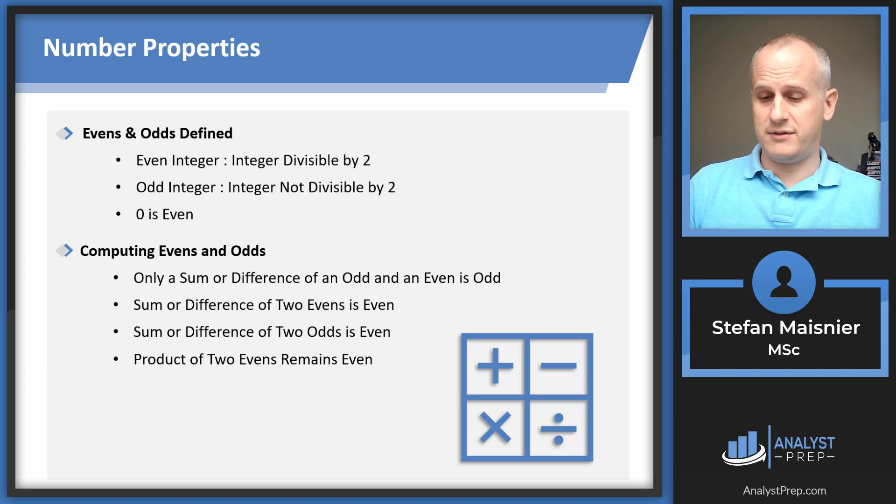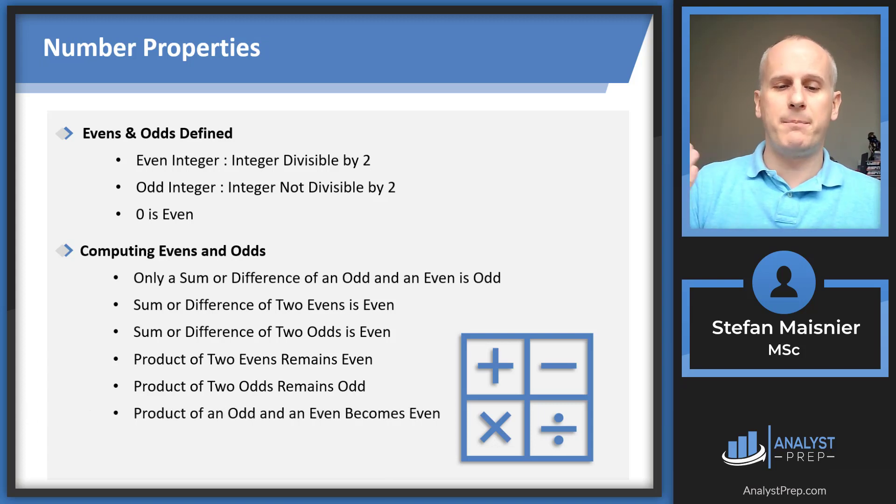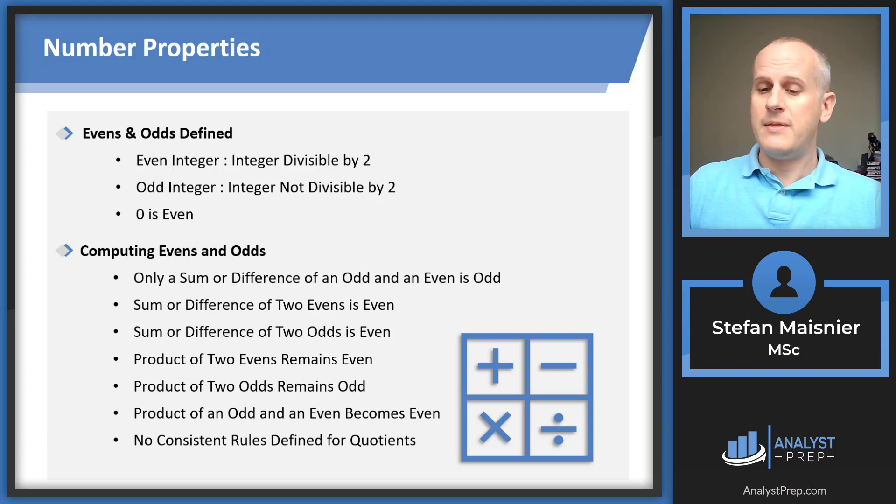When we talk about products, the product of two evens remains even. As soon as you introduce a factor of two, it's going to remain an even throughout all of the multiples as well. Two times four is eight, stays even. Two odds, however, their product will remain odd. Five times three is 15, still odd. The only way to produce an even is to introduce an even factor. So the product of an odd and an even will become even. Three times two becomes six. As soon as you introduce that factor of two, it becomes even. There are no consistent rules defined for quotients because you may not even end up with an actual integer. For that reason, quotients aren't usually tested for odds and evens in this same way.